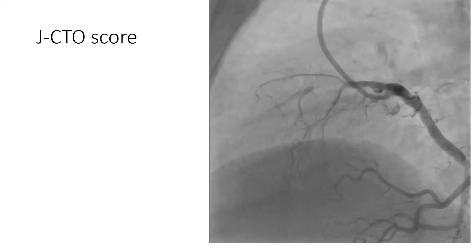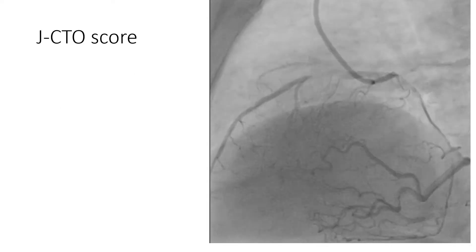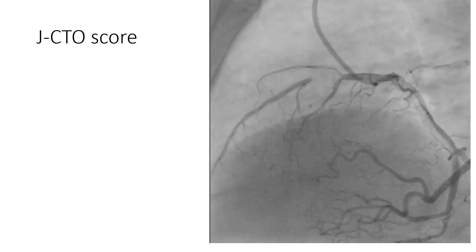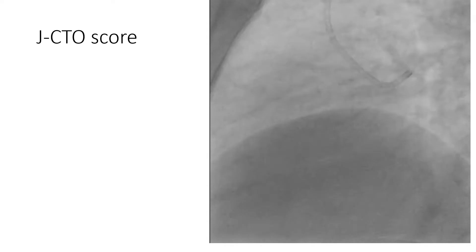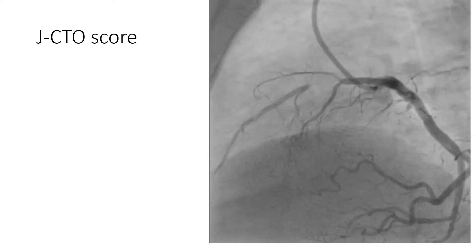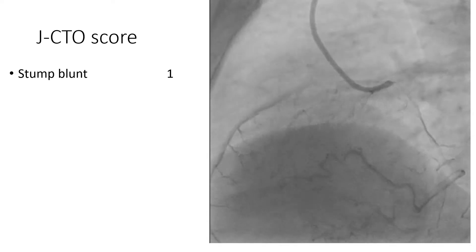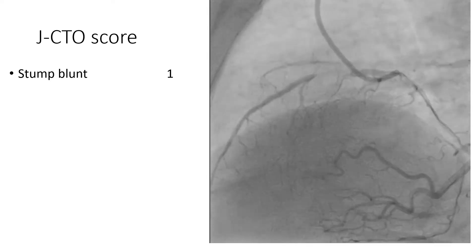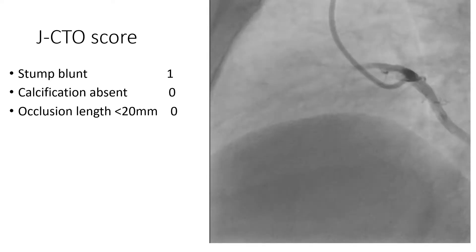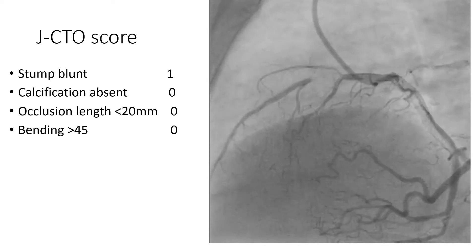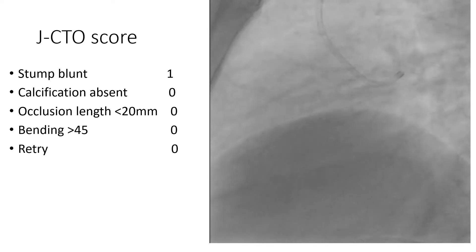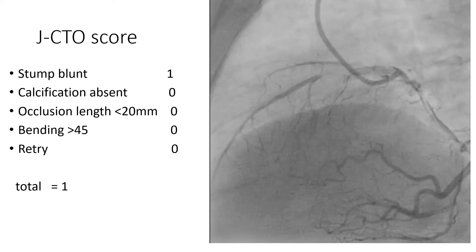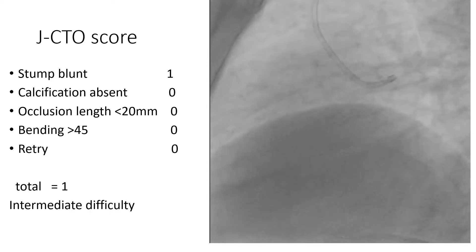This is a lateral view. It shows a blunt proximal stump, a good distal stump, and a lesion length less than 20 mm with a good distal vessel. The JCTO score would be 1 only — for the blunt stump — with no calcification, lesion length less than 20 mm, no angulation, and this being the first attempt, giving a total score of 1 and intermediate difficulty.